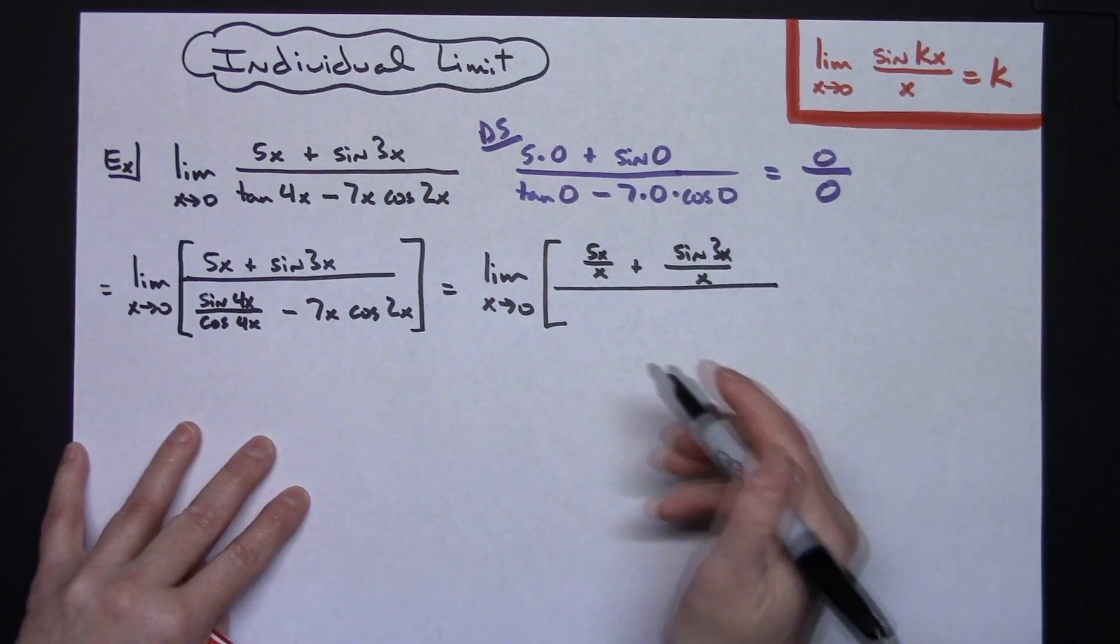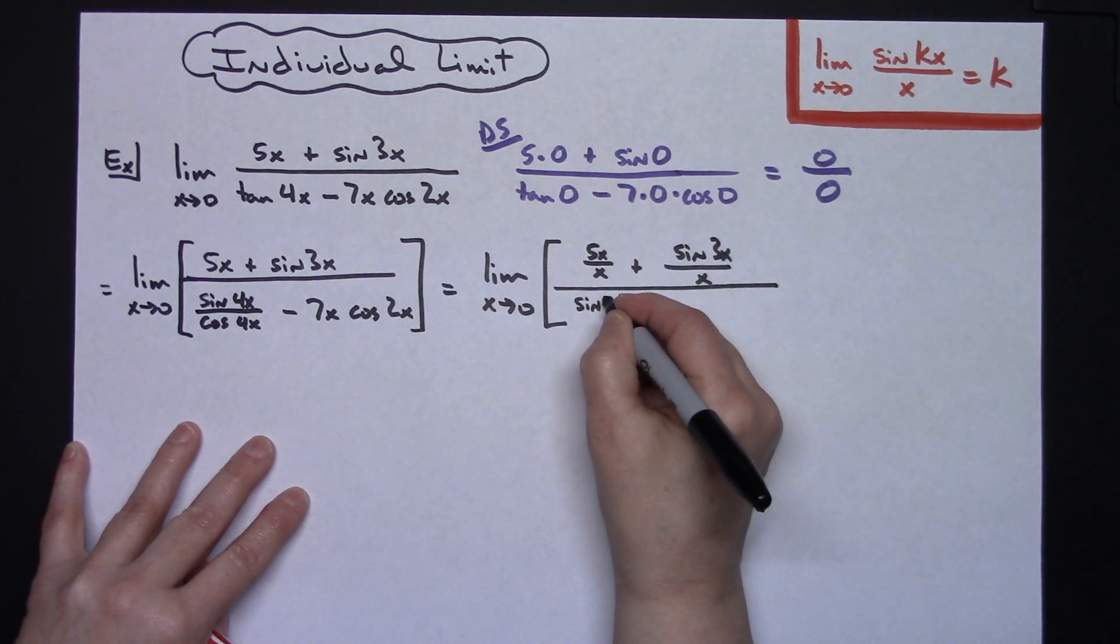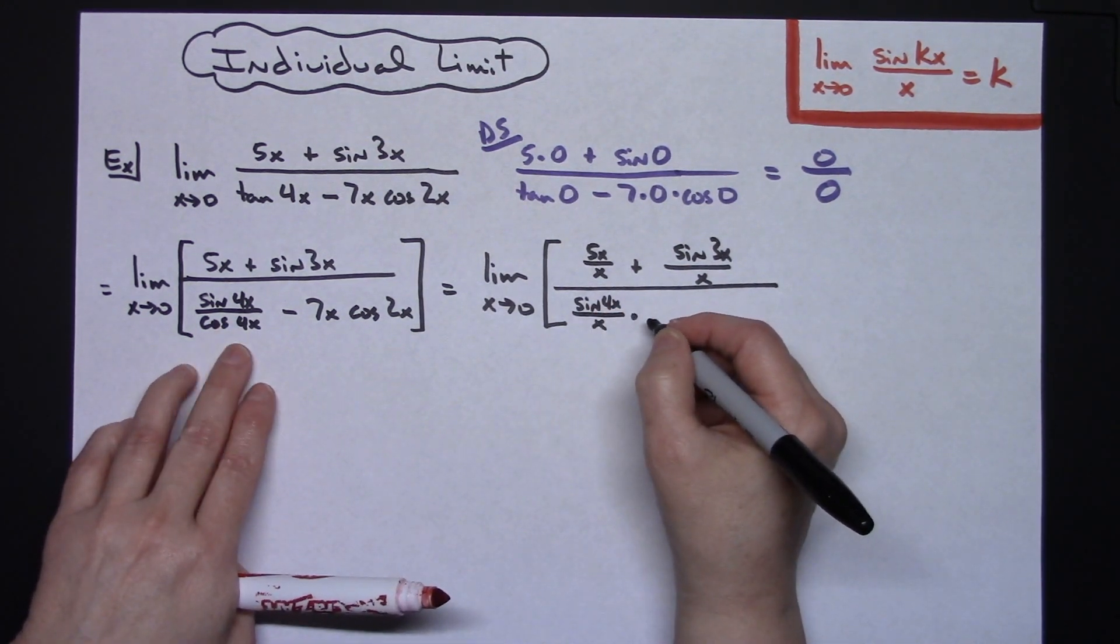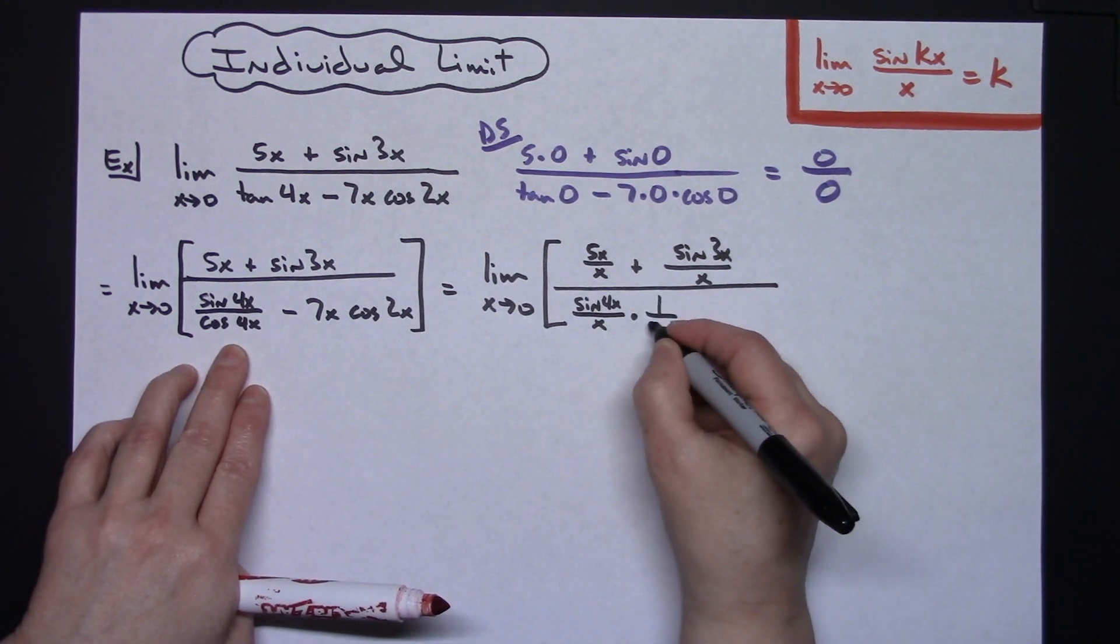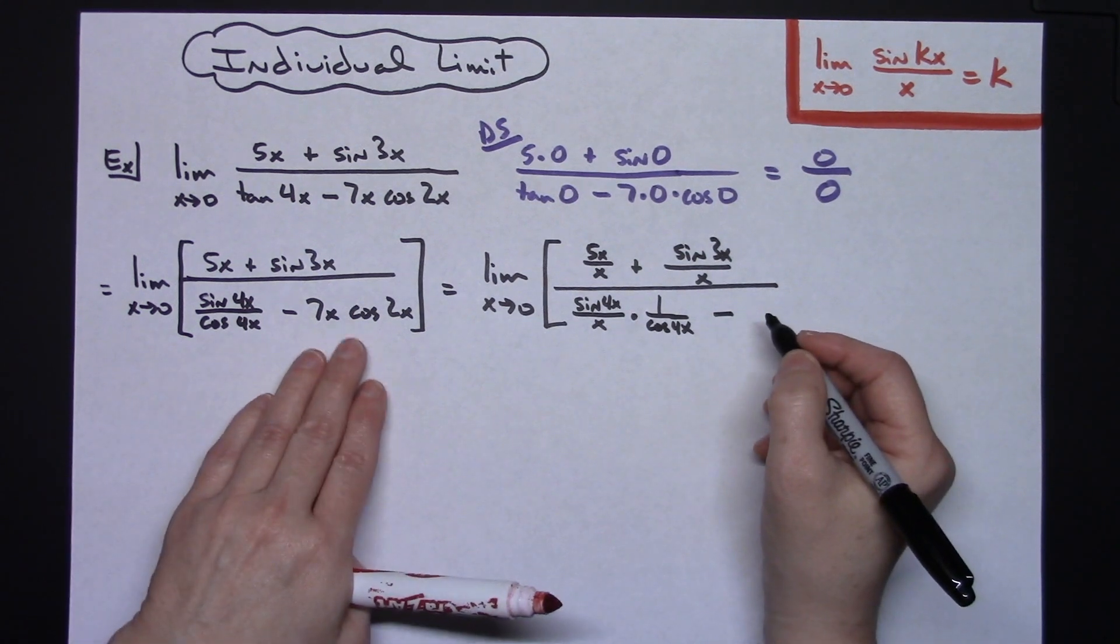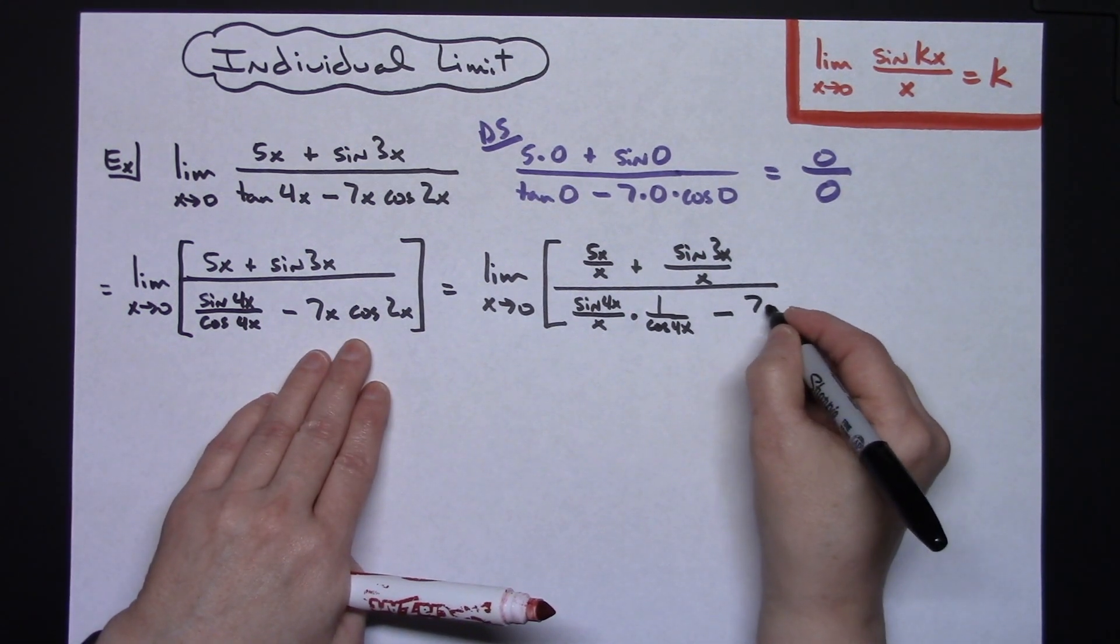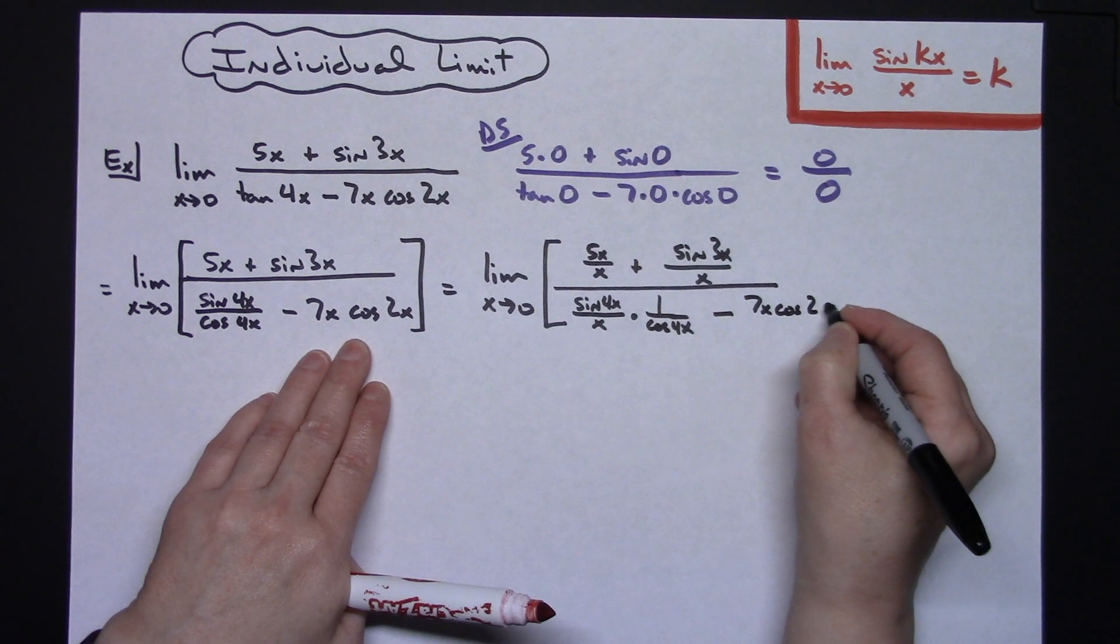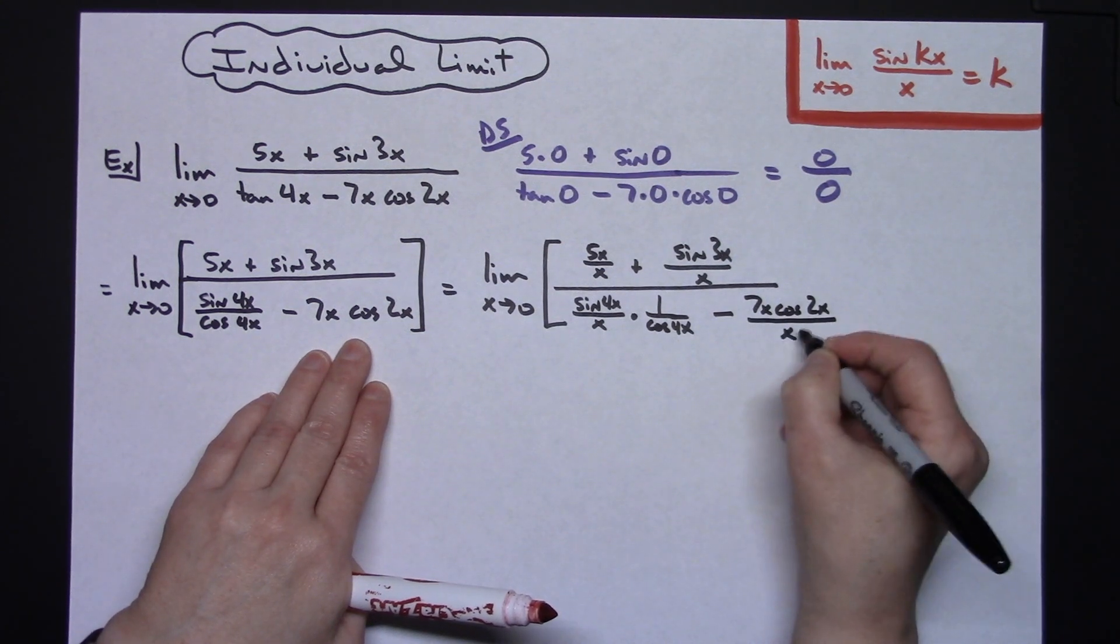I'm going to have the sine of a 4x all over an x times - now I still have that cosine of 4x so I'm just going to go cosine of 4x. And then minus this 7x cosine 2x all over x.